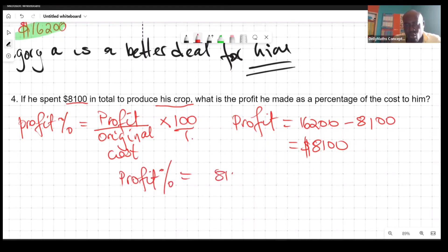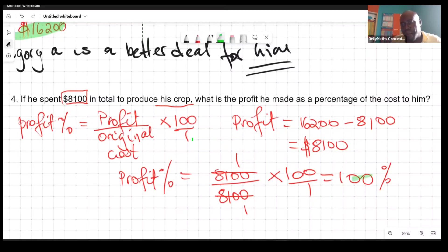The profit percentage is going to be that $8,100 over the original cost which was $8,100 as well, and then you multiply this by 100. You're seeing here that he actually made 100%, that is why he doubled his money. He made a 100% profit by selling those peppers. It seems as if the pepper is a very good deal. Thank you for watching Delamance Concepts and see you next time when we do another performance task video.